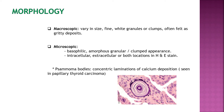Calcification varies in size — it can be fine or in clumps, often felt gritty when cutting through tissue. It can show an amorphous granular clump appearance, and can be intracellular, extracellular, or both. A psammoma body is a concentric lamination of calcium deposition, a type of dystrophic calcification seen in degenerated tissue.